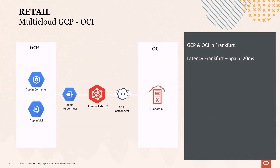The other case is a retail company splitting the application between Google and OCI. The application front end is developed under Google technology, and they connect to OCI using Autonomous Database to get the best of both clouds. Google provides the front end; Oracle provides the database using Oracle Autonomous. Both are interconnected with Equinix Fabric. Both data centers are located in Frankfurt with a latency of less than 2 milliseconds, which enables the application to perform with very good performance.